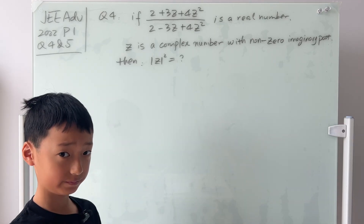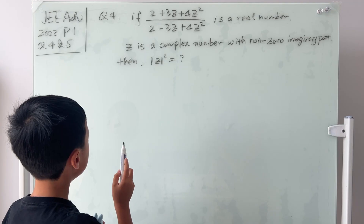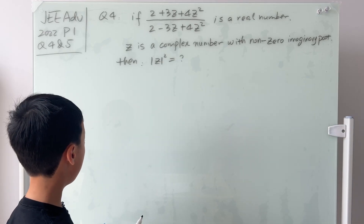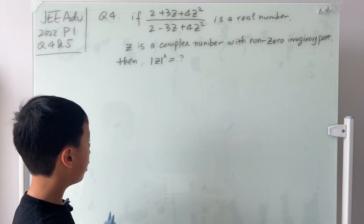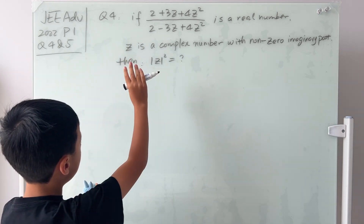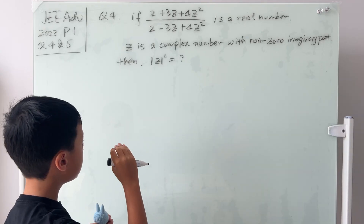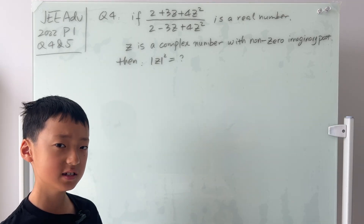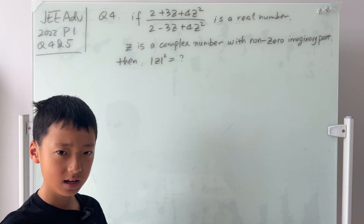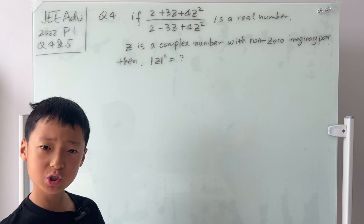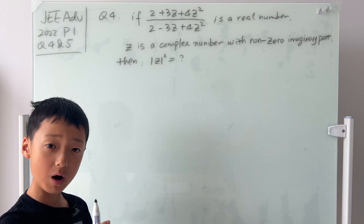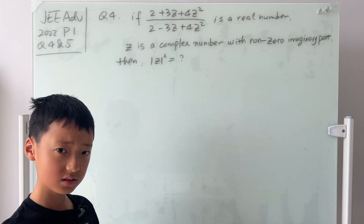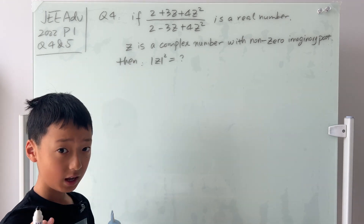This is question 4. The question states that if this fraction is a real number and z is a complex number with a non-zero imaginary part, then we have to find z modulus squared. So this whole thing is just a pile of i's — but how can a pile of i's be real? Why don't we compile all of the i's into one place and make it a real number? I'm going to manipulate this fraction and show you how.